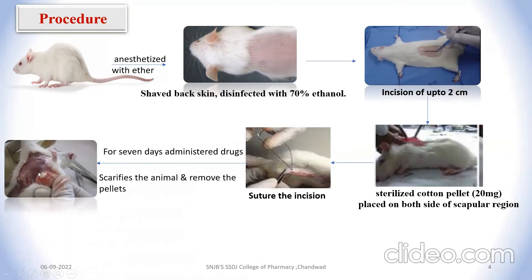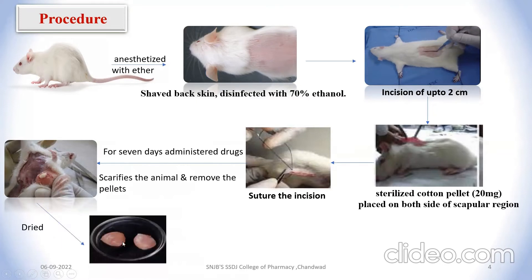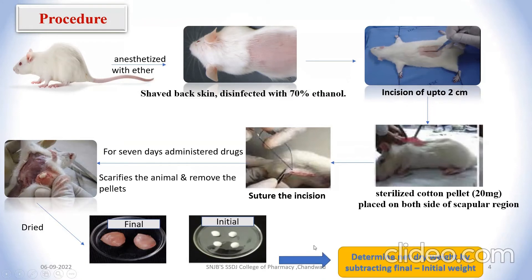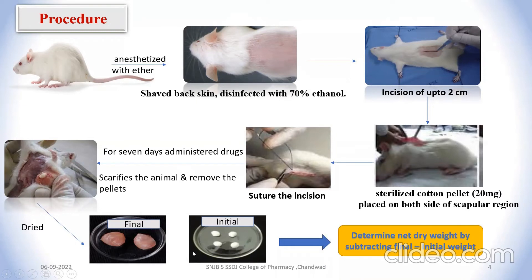In this picture you can observe that after sacrificing the animal there is a pellet present. Remove the pellets, then dry them until you get a constant weight. The cotton wool pellets will have deposition of connective tissues and infiltration material. The difference between the final and initial weights gives you the deposition of connective tissue and giant cells on the pellets — the net dry weight of the tissue — which gives you the idea about the anti-inflammatory activity of the drug.